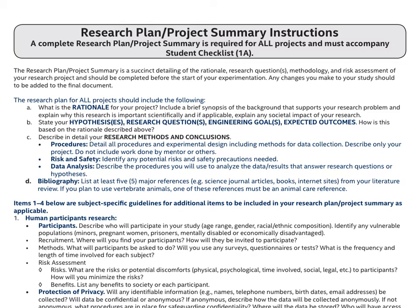The most important part of the project approval form is what is called the research plan or project summary. The research plan gives details on the rationale, the research question, methodology, risks involved, and other details of how the experiment is going to be performed. It is no wonder that this is also the portion that is most scrutinized.